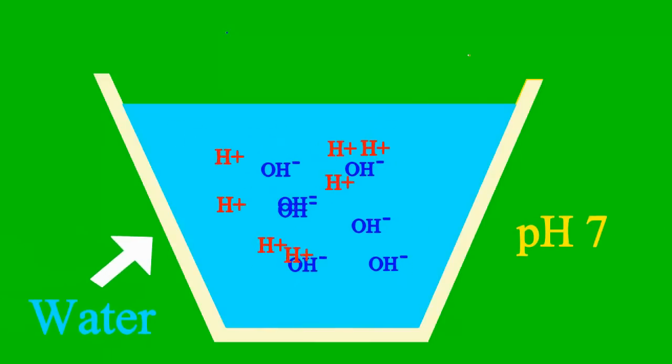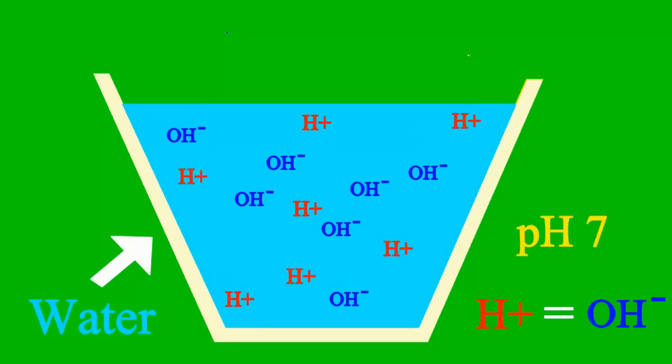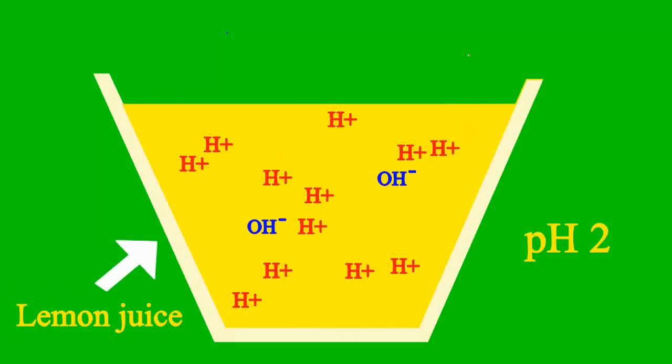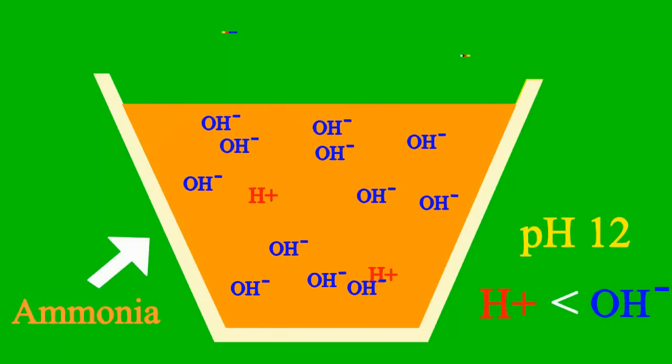When the pH is 7, then it's a case where the sample is neither an acid nor base. But less than 7, it's an acid, we say. More than 7, it's a base all the way.